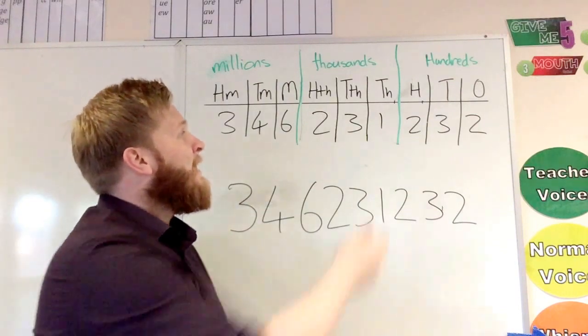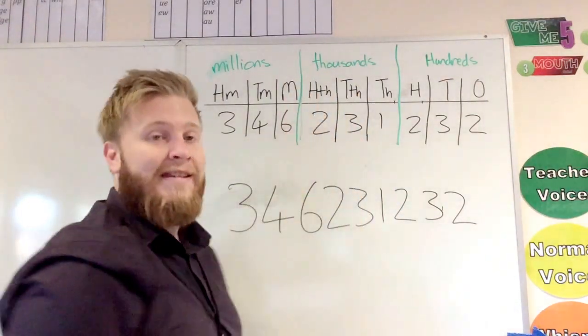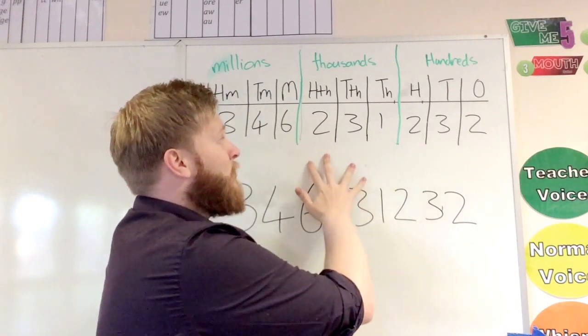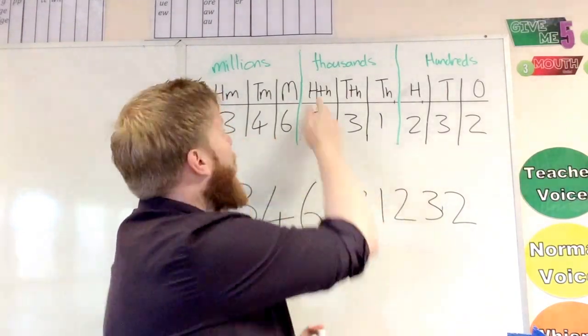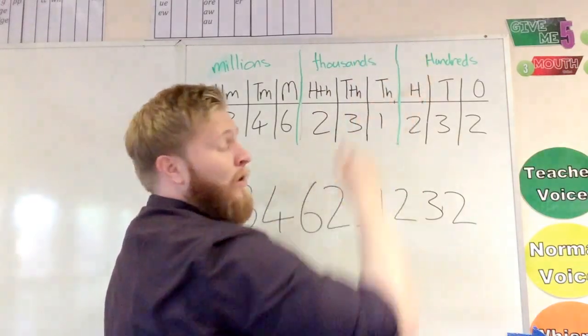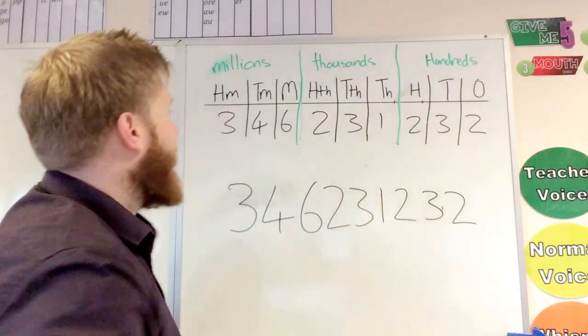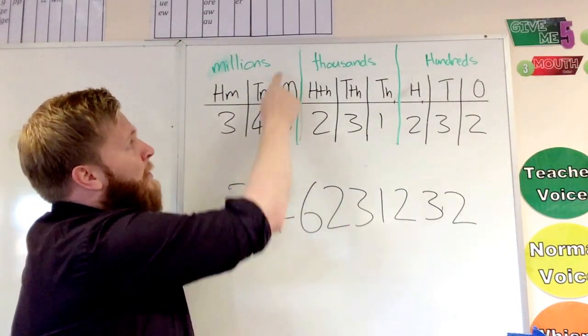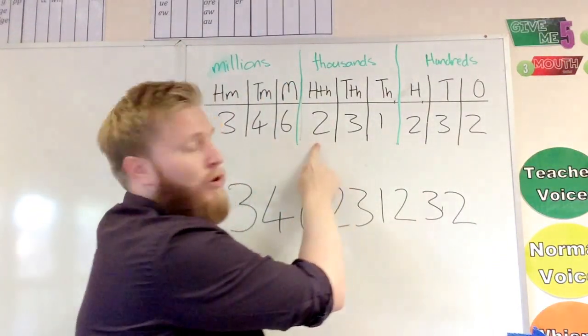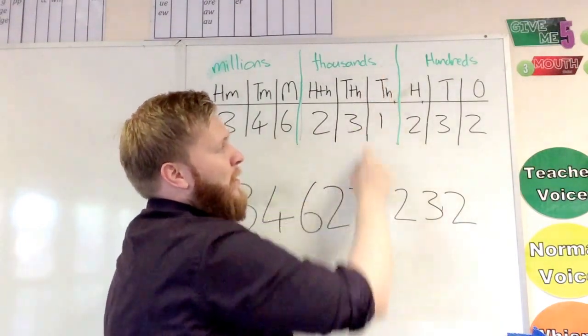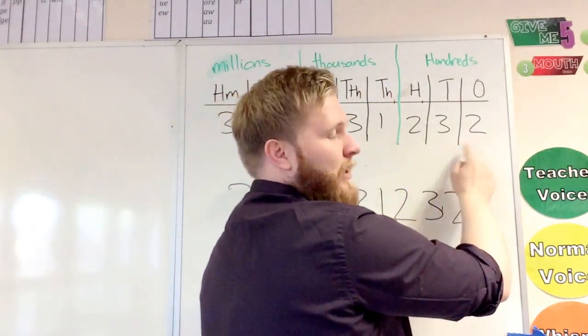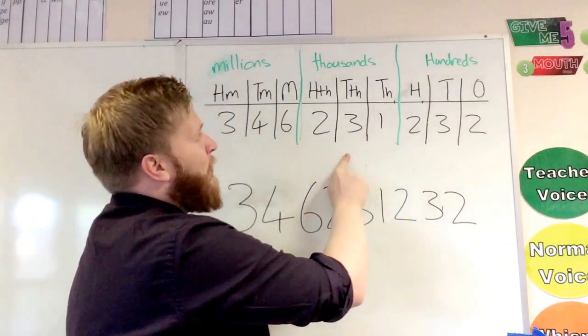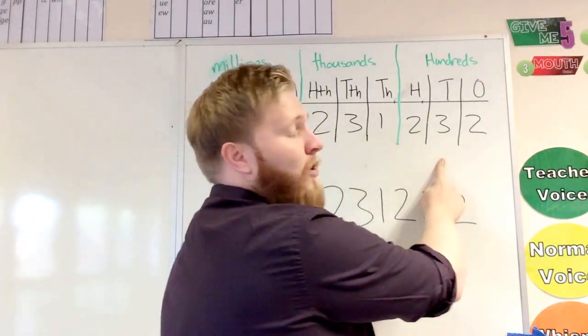Okay, and then we can see because I've got those lines in there separating them into three different sections, all we need to do is read each section with our header at the end of it. I'll show you what I mean. So here your number there, if we've got a three digit number, 346 million, 231 thousand, 232.